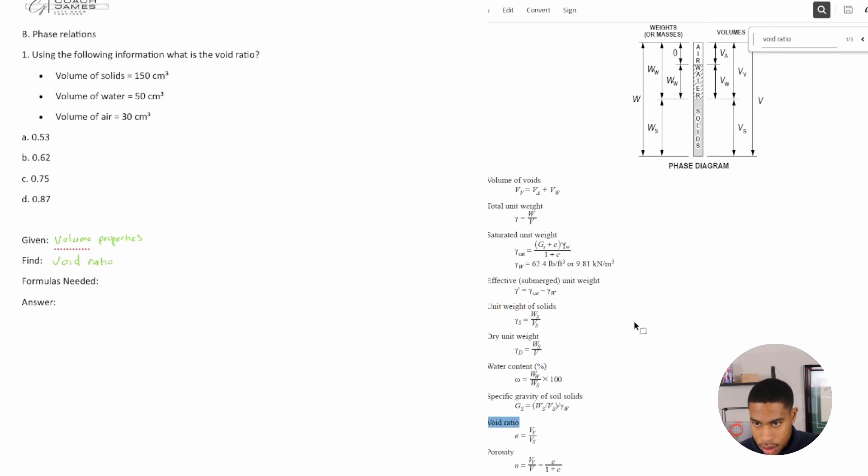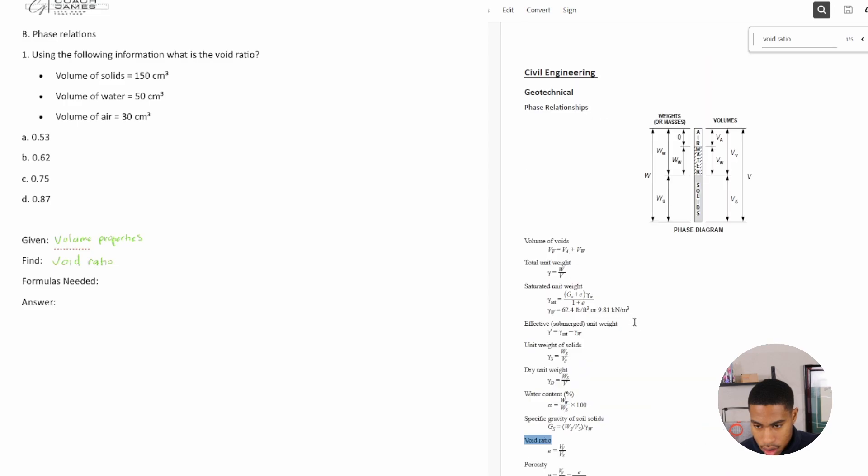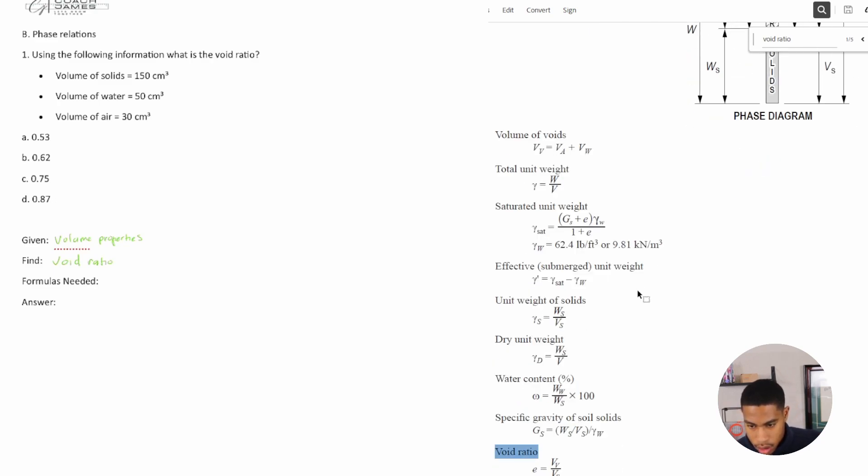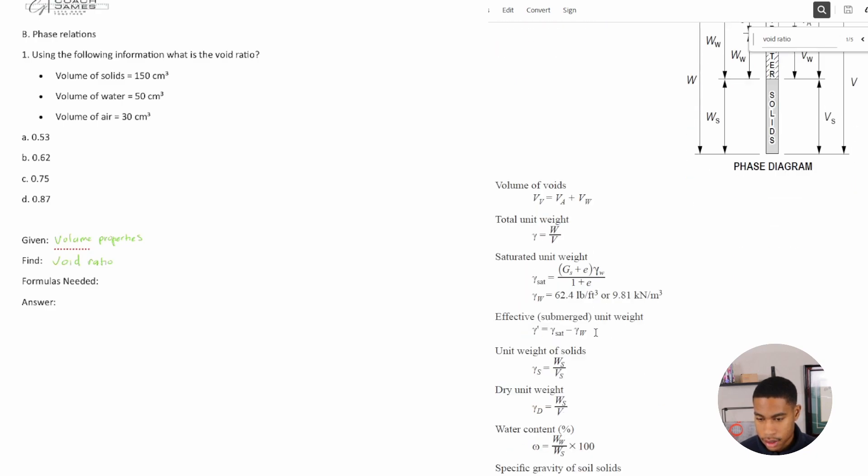Well, what is VV? So VV is going to be volume of voids. And so volume of voids over VS stands for volume of solids. VS is for solids. VW, this diagram helps, VW is volume of water. VA is volume of air. So just some things to note.